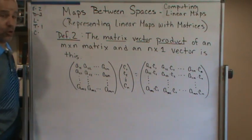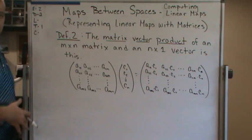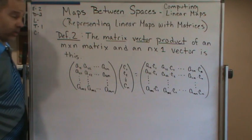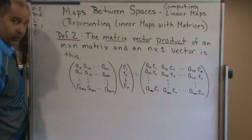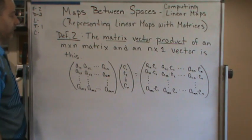Okay, so now Definition 2. It's basically just reiterating what we just learned. Definition 2 is the matrix-vector product. Now it's defined as an operation.